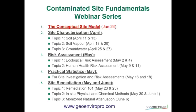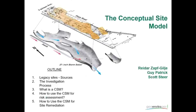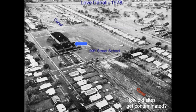Now for the conceptual site model — we're going to talk about how the CSM is instrumental in the entire process of contaminated site investigation and remediation, how it helps us with design of sampling plans, figuring out exposure pathways for risk assessment, and selecting the best remediation technologies. We'll first start with talking about legacy sites and sources of contamination, then briefly go over the investigation process and how to use the CSM for risk assessment, investigation, and remediation.